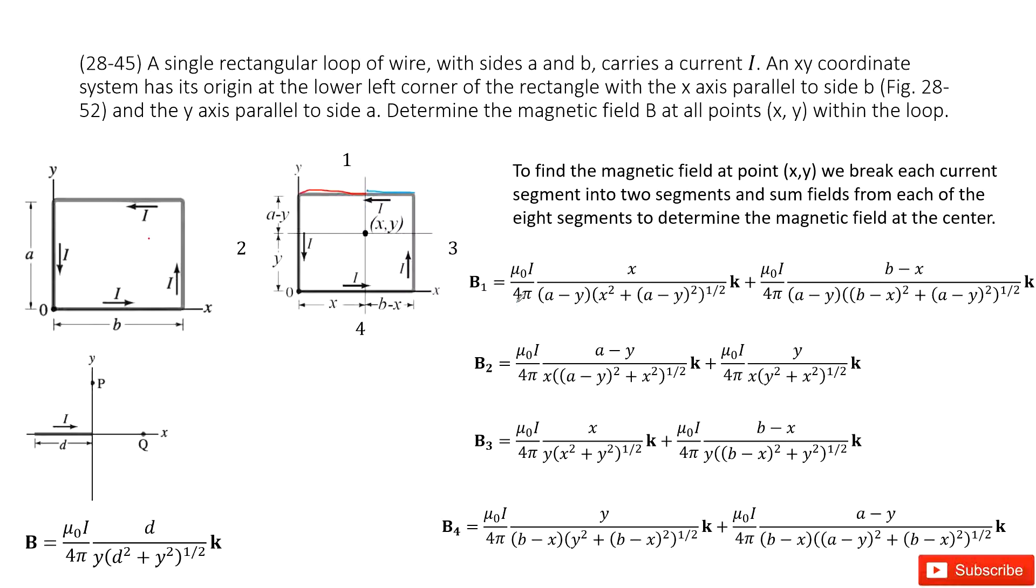Now you can come back to there. So for this red part, we can see the length for this wire is x. So we replace the d as x. Now the distance from the wire to the position p is a minus y. So we replace the y as a minus y. The direction is the k direction, k is pointing out. You can use the right-hand rule to determine its direction.